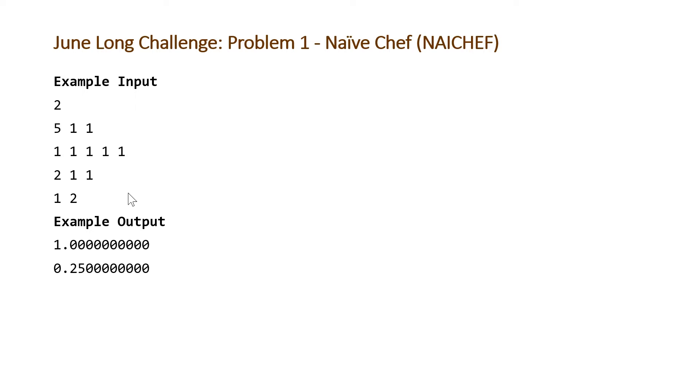So we have two test cases here. And for the first one, we should output 1. And for the second example, we should output 0.25. And note, the question states that we need to have accuracy within 10 to the negative 6.